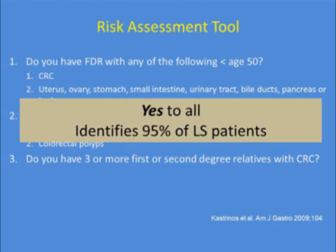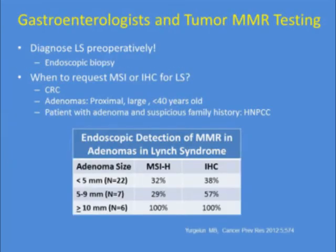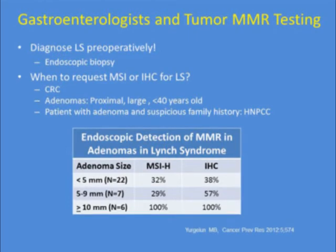It's important to diagnose Lynch syndrome preoperatively, which can be done by endoscopic biopsy. For universal testing, you'd want to test tumors in the endoscopy suite. Also consider MSI or IHC on adenomas that are proximal, large, in a person under age 40, or in a patient with an adenoma and a suspicious family history for HNPCC or Lynch syndrome.